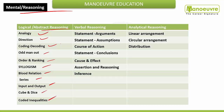These topics are from logical and abstract reasoning. From verbal reasoning, the questions you will be asked include: statement and argument, statement and assumption, course of action, statement and conclusion, causes and effect, assertion and reasoning, and inference.